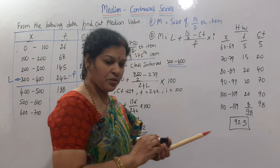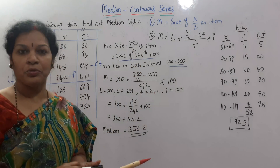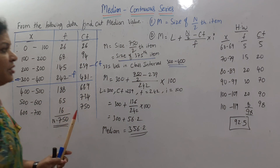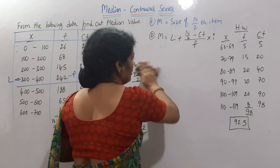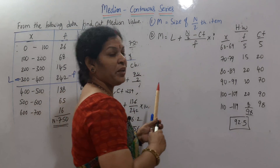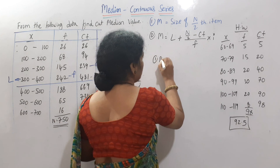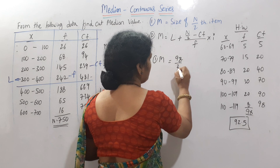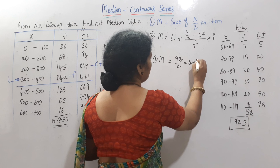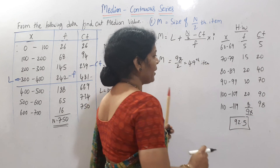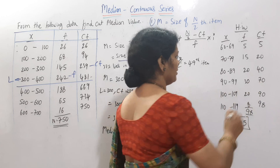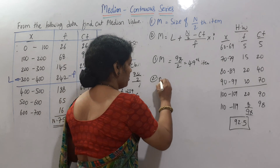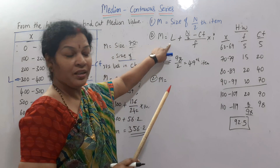Apply formula one: m = size of n/2 th item. n = 98, so 98/2 = 49. We need the 49th item. Locate 49 in the cumulative frequency — it falls in the class interval 80–89 row. Draw a line across that row. Now move to formula two: Median = L + (n/2 − CF) / f × i.